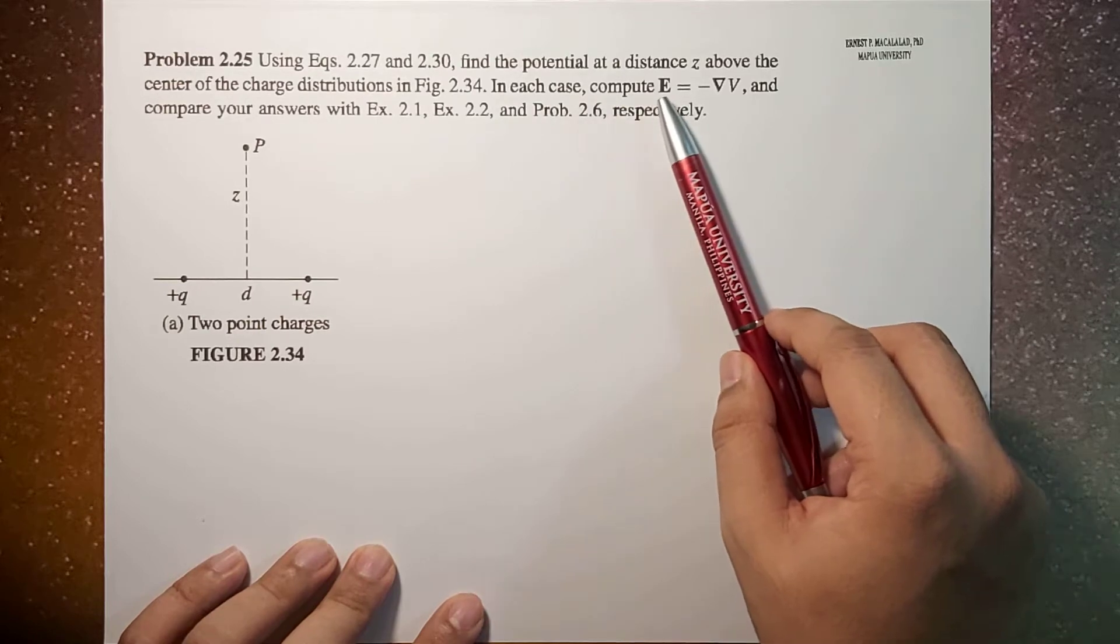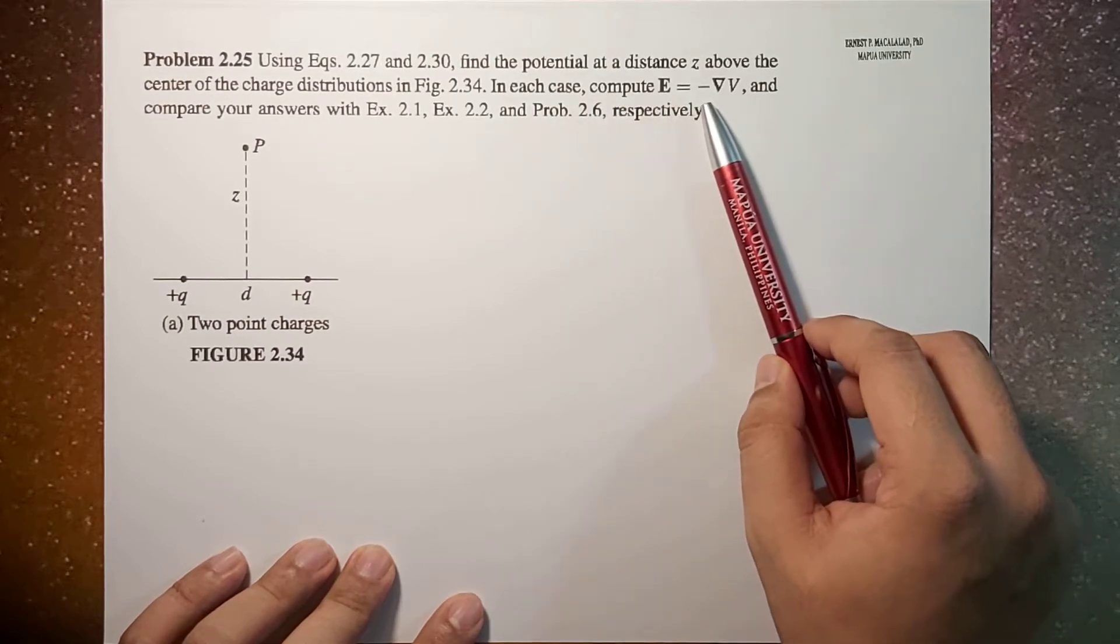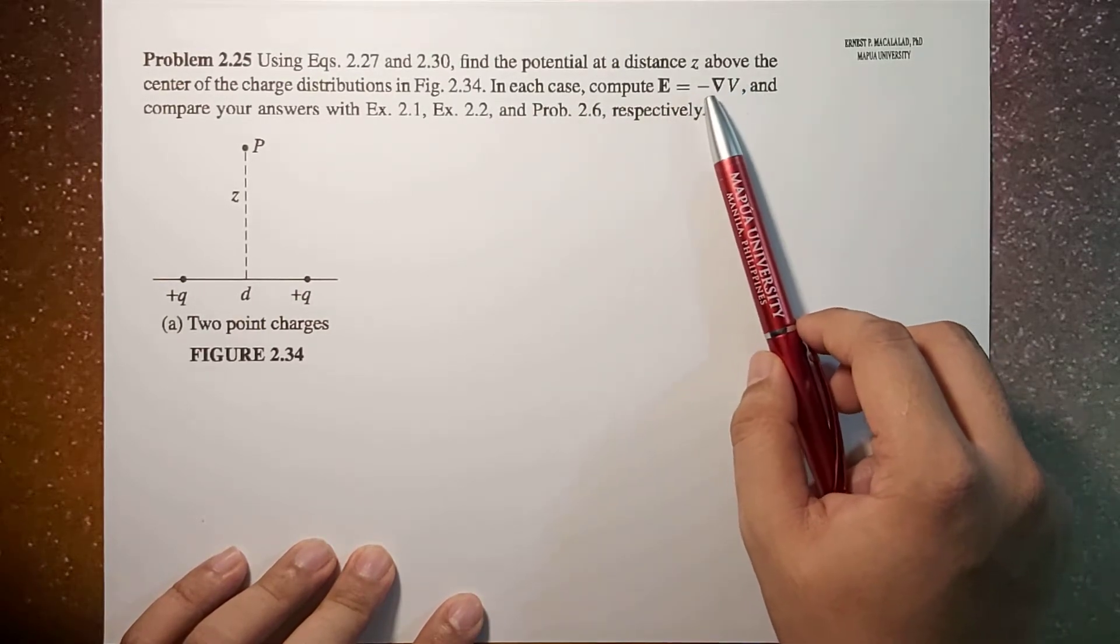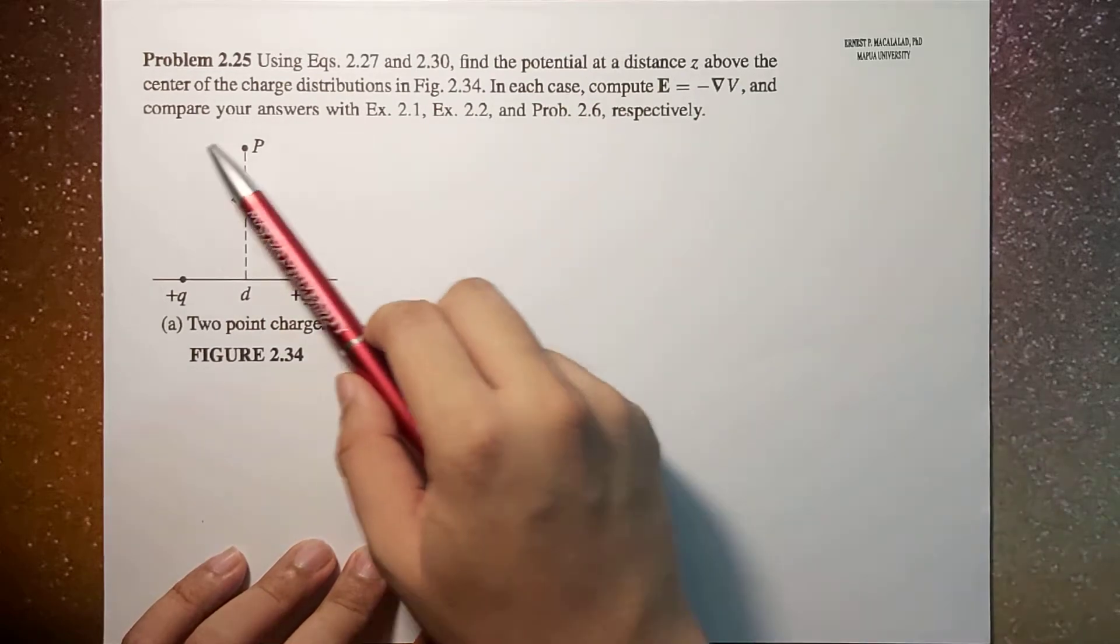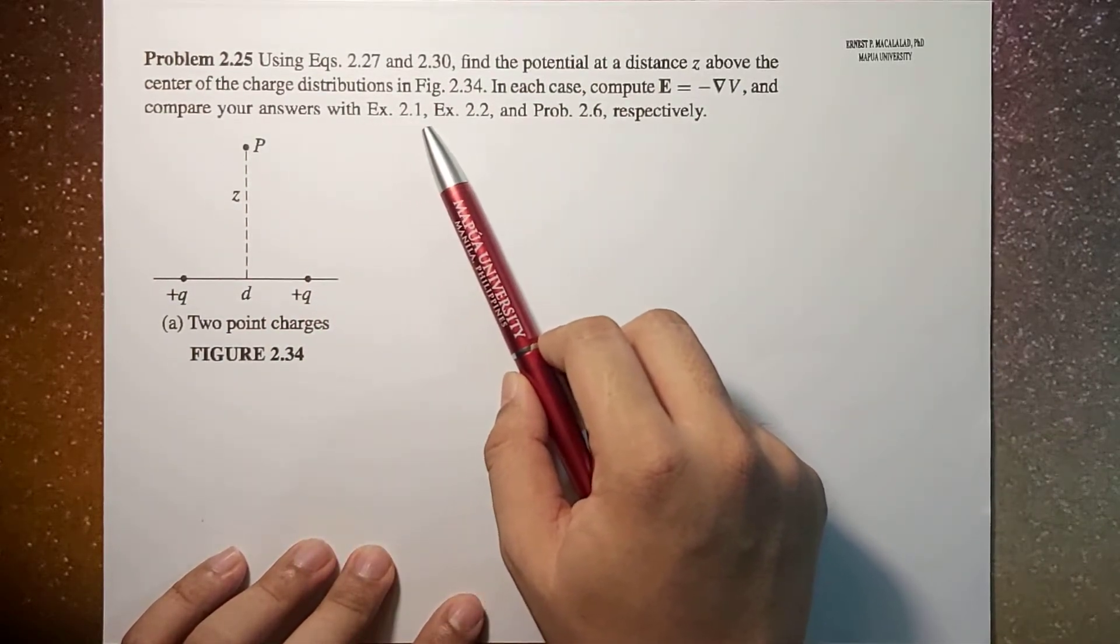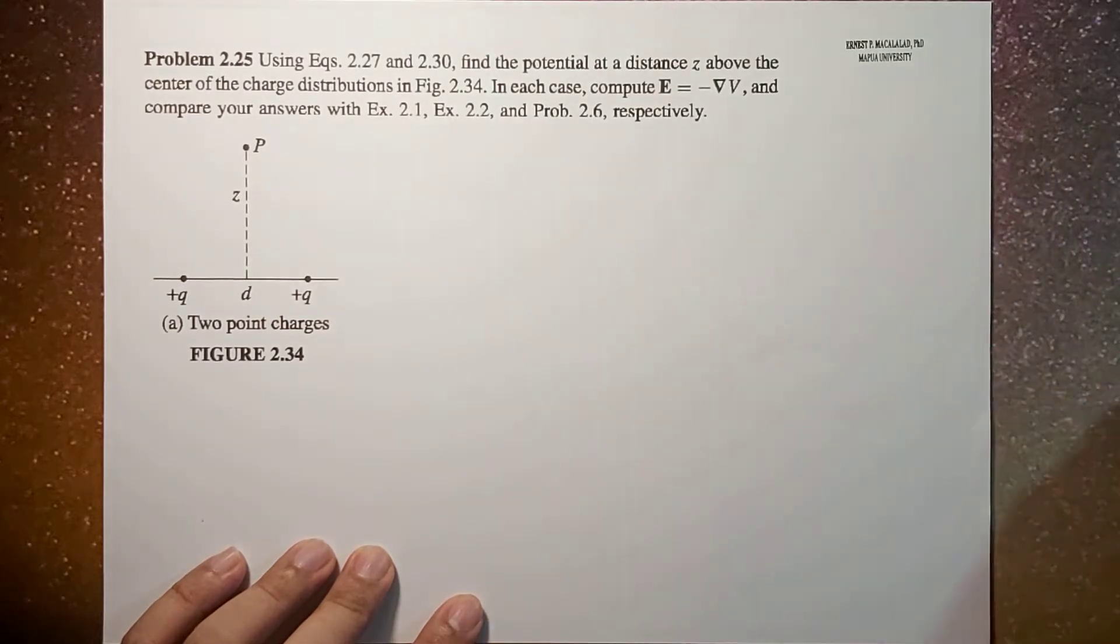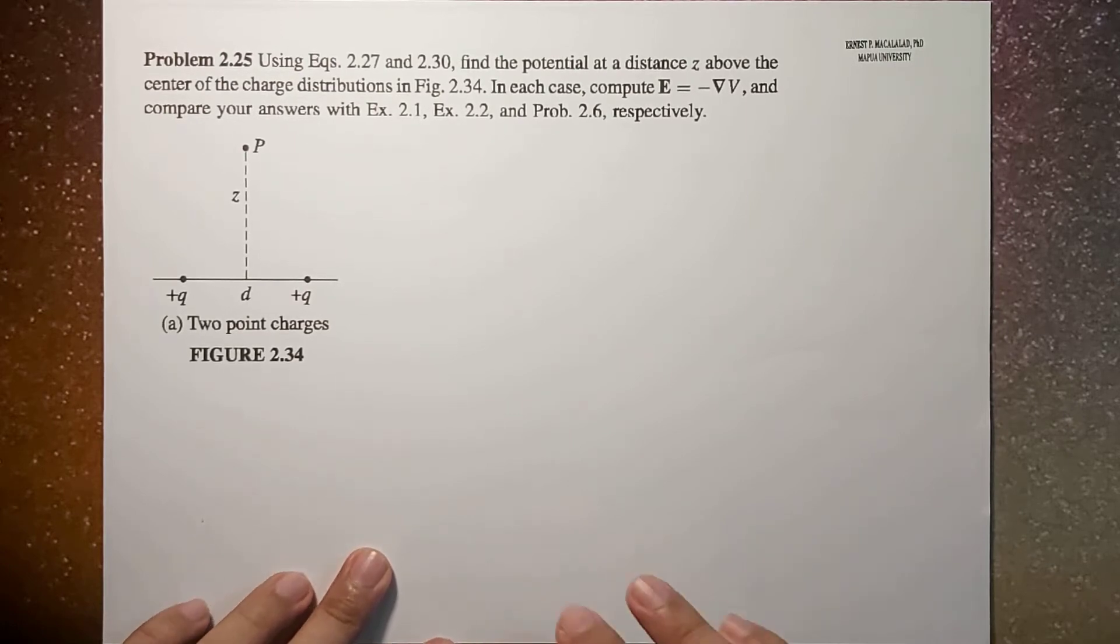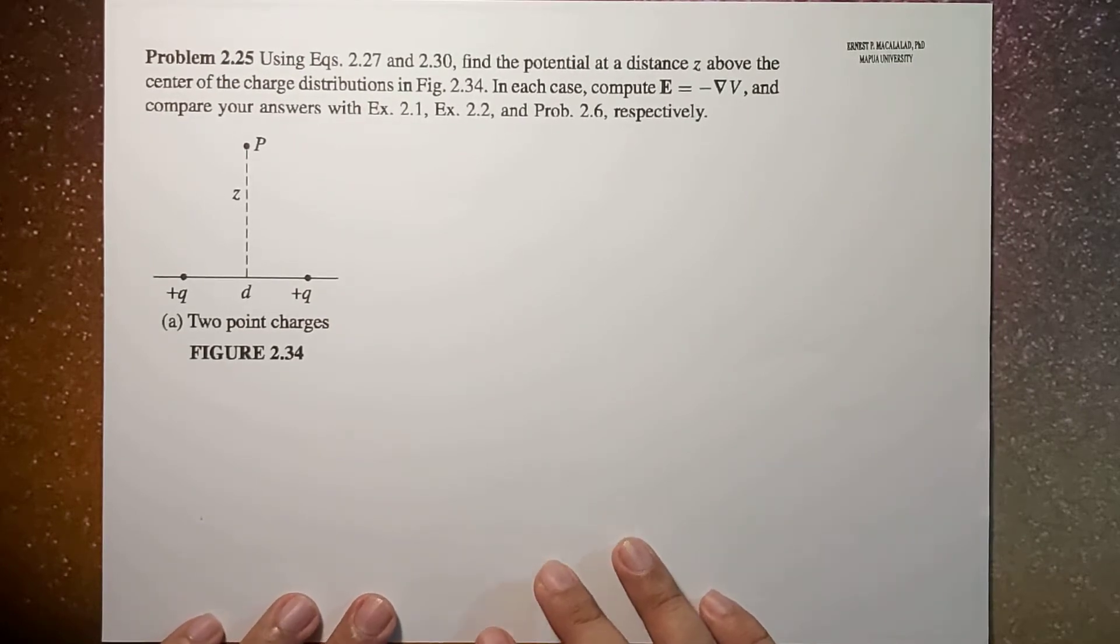In each case, compute the electric field using the definition of negative gradient of the potential, and compare your answers with examples 2.1, 2.2, and problem 2.6. So this problem has three parts or three configurations.